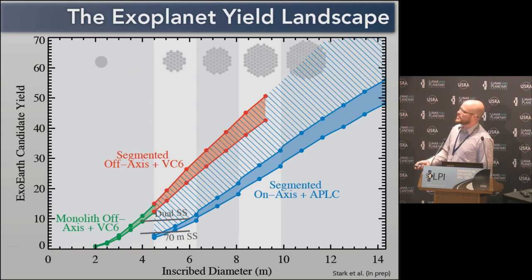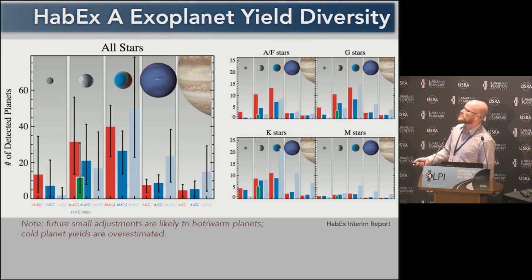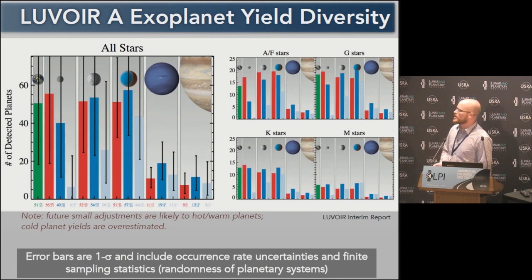Starshade-only missions are going to be down at the lower end — they're fuel-limited. Here's where HabEx-A, LUVOIR-B, and LUVOIR-A would reside on this plot. While we're hunting for ExoEarth candidates shown in green with HabEx, we're going to get dozens of all sorts of other types of planets along the way for free. LUVOIR, I think, would really usher in a completely new era of comparative planetology. And with that, I'll take questions.